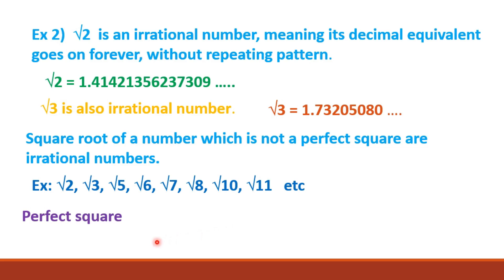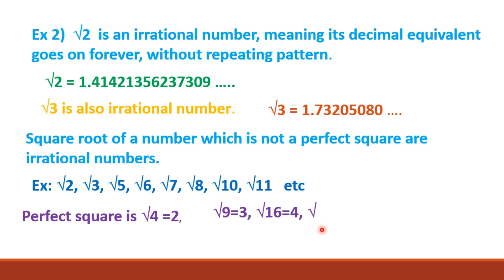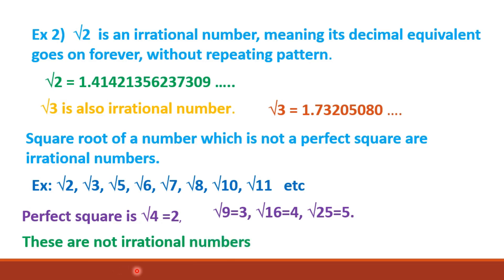A perfect square example is square root of 4. Square root of 4 is not an irrational number because square root of 4 equals 2. Similarly, square root of 9 is 3, square root of 16 is 4, and square root of 25 is 5. These perfect square numbers are not irrational — they are rational numbers.